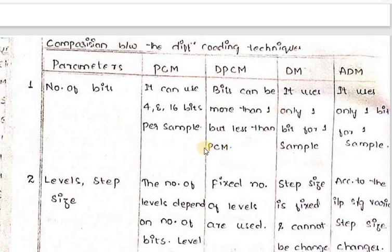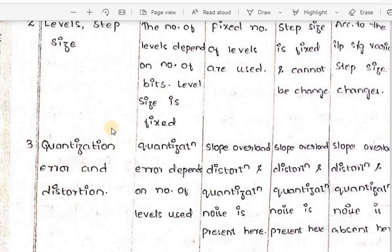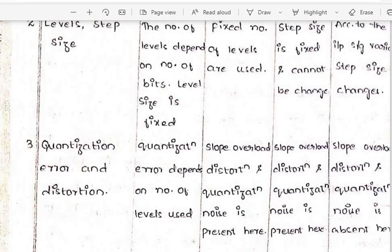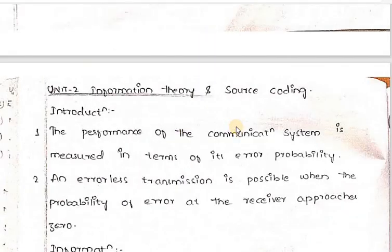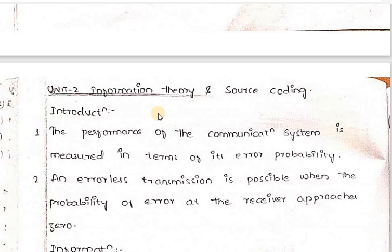Now let's move on to our next unit — Information Theory and Source Coding. By the name itself you can understand what information is. In this unit, the main topics we'll cover are: uncertainty, information, and entropy; source coding; and mathematical methods — the famous Shannon-Fano coding and Hamming code. We'll also see binary symmetric channels.